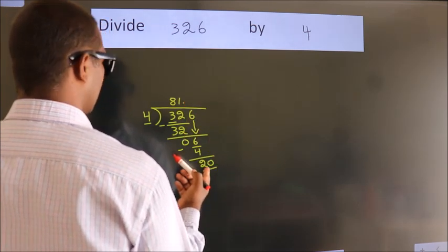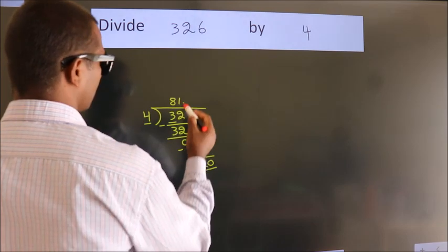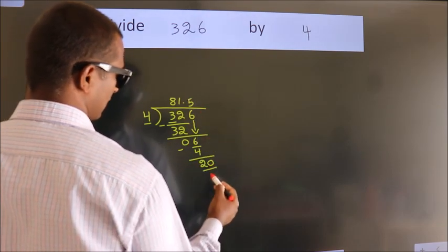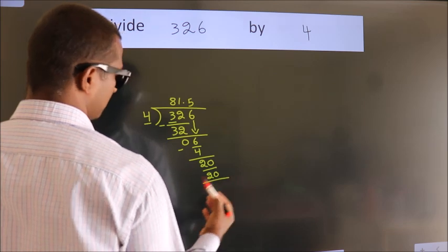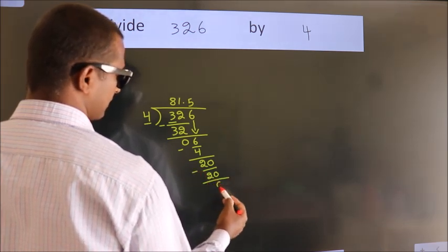When do we get 20? In 4 table. 4 5s, 20. Now we subtract. We get 0.